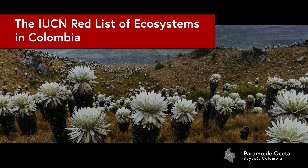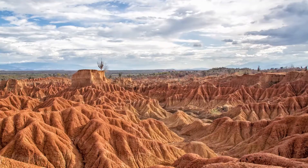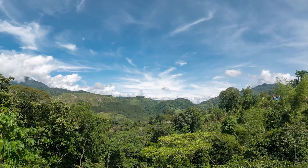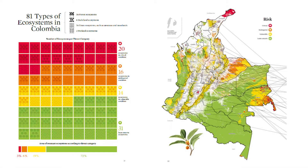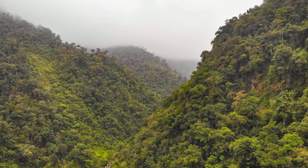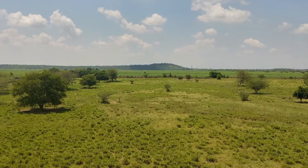My name is Andres Etter and I led the project that undertook the Red List of Ecosystems for Colombia. Colombia is a highly ecologically diverse country with more than 81 ecosystems mapped through this assessment. We found that 20 ecosystems were classified as critically endangered, with over 80% of their area already transformed. These ecosystems are mainly located in the tropical dry forest biome and in the tropical savannas.